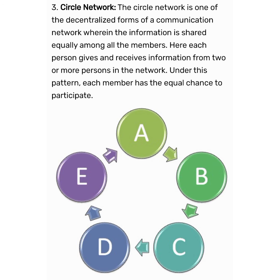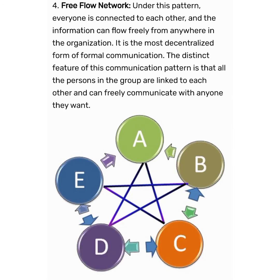Next is Free Flow Network. In Free Flow Network, each person can communicate with others freely. Though in this network communication flow is fast, it may create coordination problems if not managed properly. Under this pattern, everyone is connected to each other and the information can flow freely from anywhere in the organization. It is the most decentralized form of formal communication, and all the persons in the group are linked to each other and can freely communicate with anyone they want.